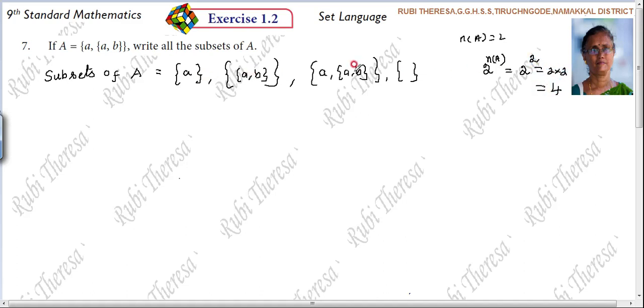So how many subsets you must have? 4 subsets. So 1, 2, 3, 4. So your answer is correct. Do you follow? For this there is no mark. For your verification you are doing. This is the exact answer. Do you follow, every one of you?